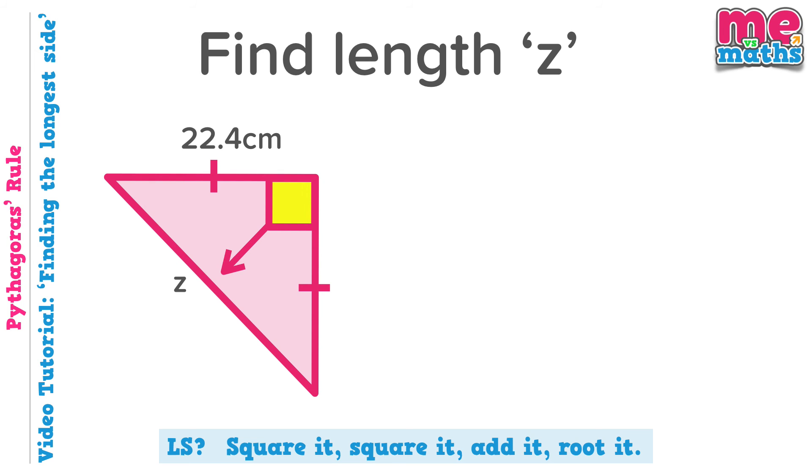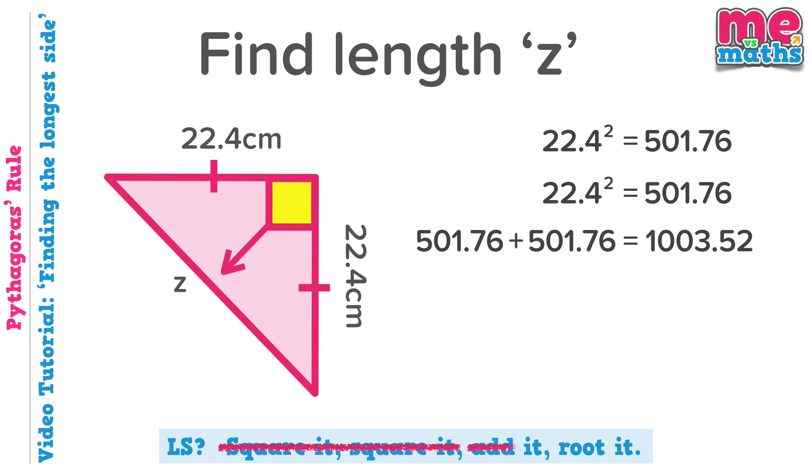Now this looks a bit funny because we've only been given one side. These little symbols here mean that these two sides are the same length, it's actually an isosceles triangle, so the other short side is also 22.4 centimeters. Therefore we need to square 22.4 twice, add the answers together, root and round, giving our final answer which is 31.7 centimeters.